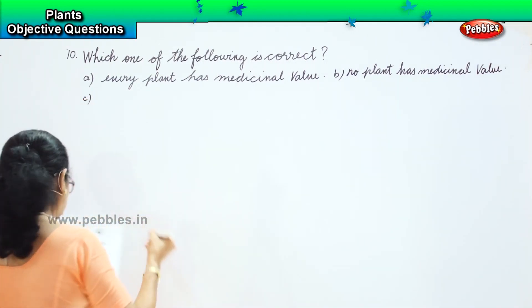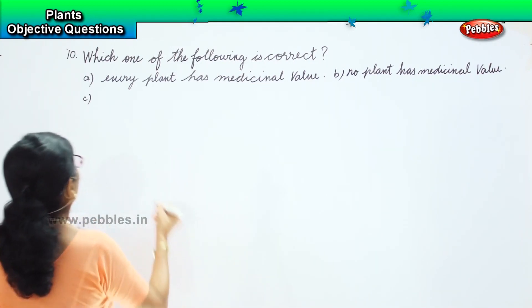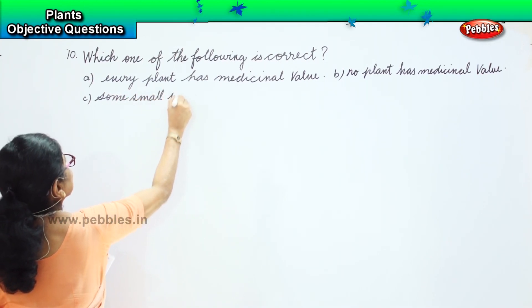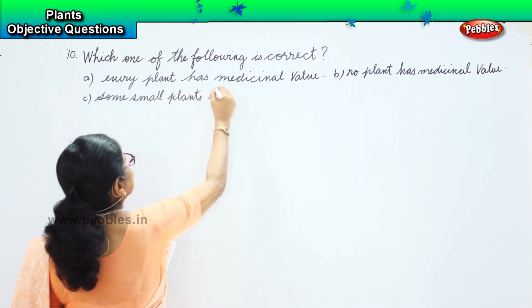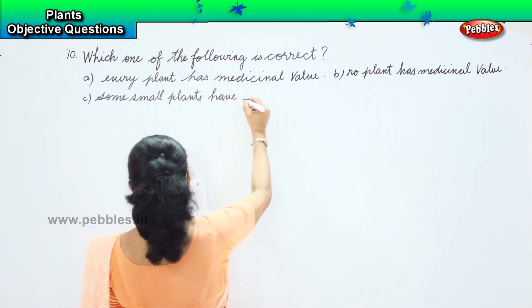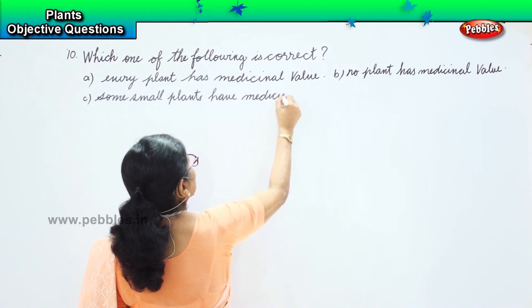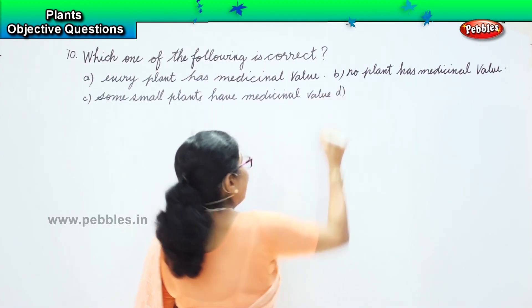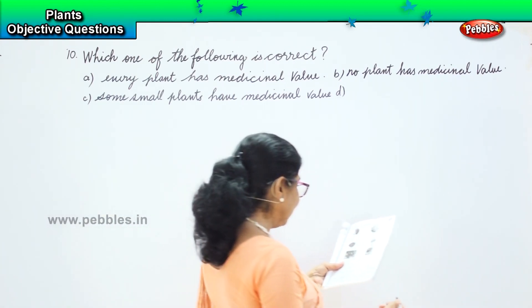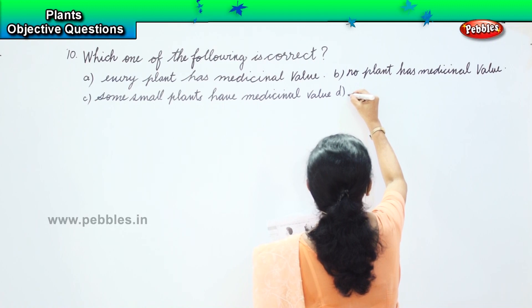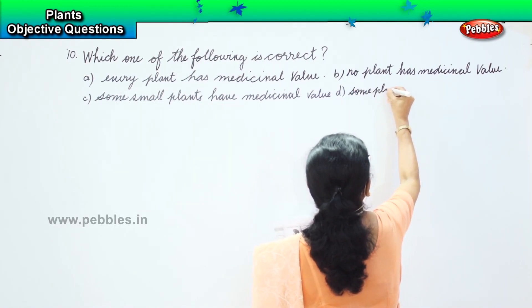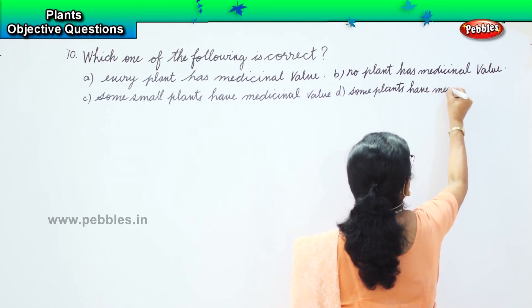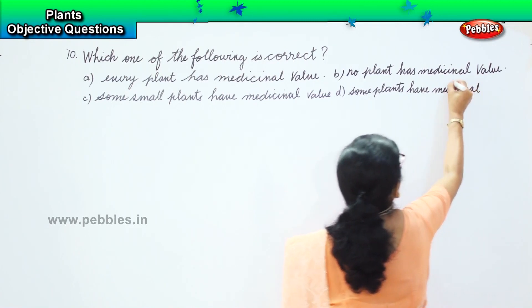Option C: some small plants have medicinal value. Option D: some plants have medicinal value.